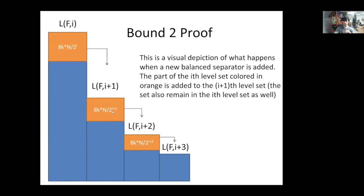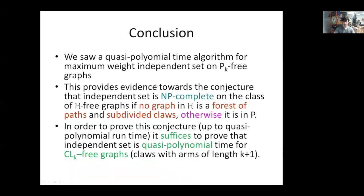In conclusion, we presented a quasi-polynomial time algorithm for maximum weight independent set on Pk-free graphs. Key points: this provides evidence towards the conjecture that independent set is NP-complete on fancy H-free graphs if no graph in fancy H is a forest of paths and subdivided claws; otherwise, we conjecture all remaining cases can be solved in polynomial time. And in order to prove this conjecture — up to quasi-polynomial runtime — it suffices to prove that independent set is quasi-polynomial time for CLK-free graphs, where CLK graphs are claws with arms of length K+1.